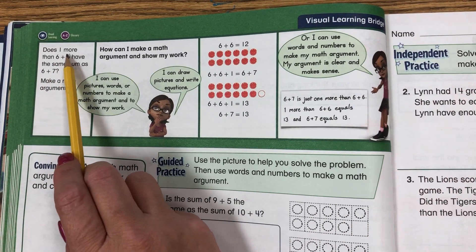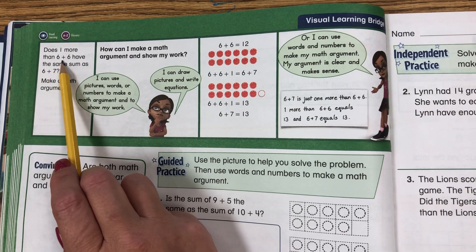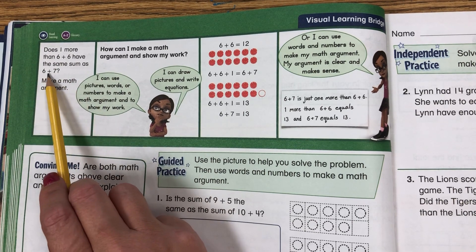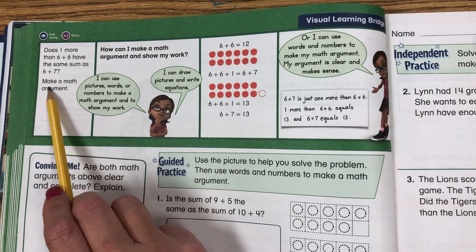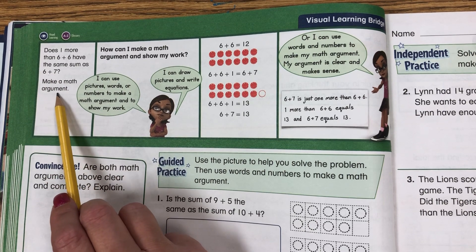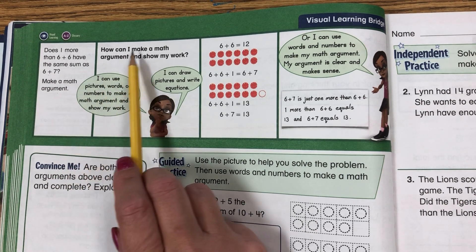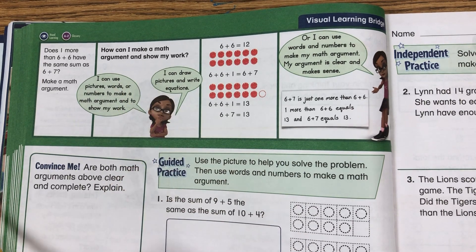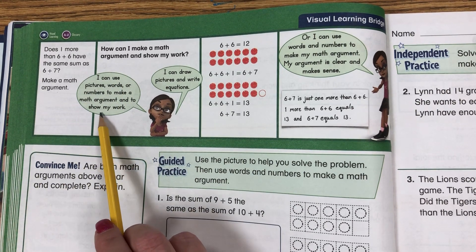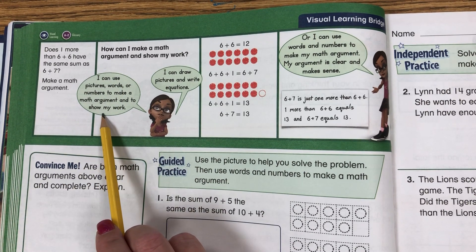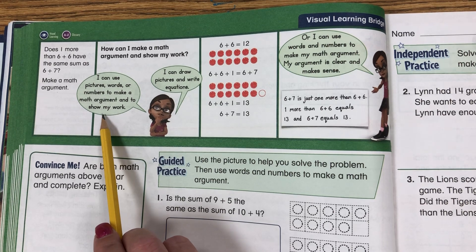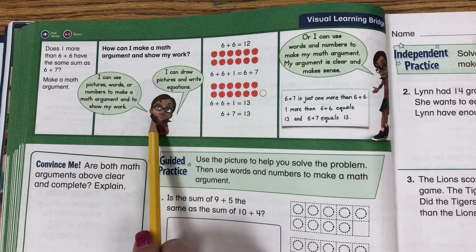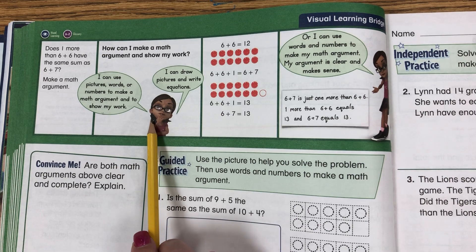On the next section it says, does one more than 6 plus 6 have the same sum as 6 plus 7? Make a math argument. How can I make a math argument and show my work? I can use pictures, words, or numbers to make a math argument to show my work. I can draw pictures and write equations.